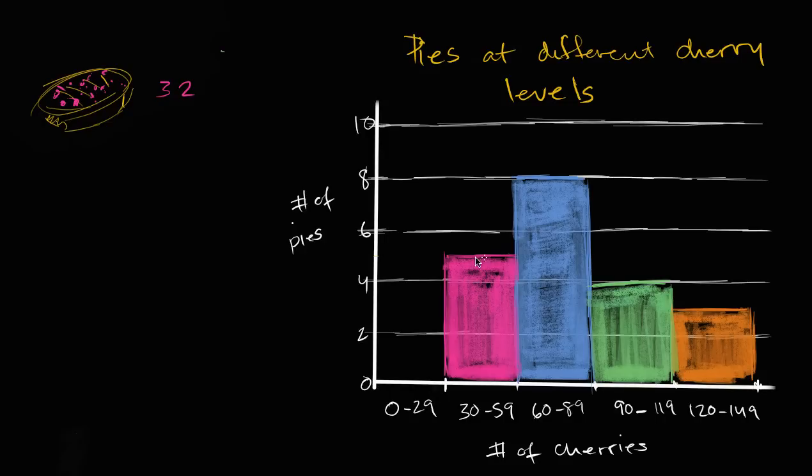Well, what's the total number of pies? Well, let's see. There's five pies that have at least 30 cherries but no more than 59. You have eight pies in this blue bucket. You have four pies in this green bucket.